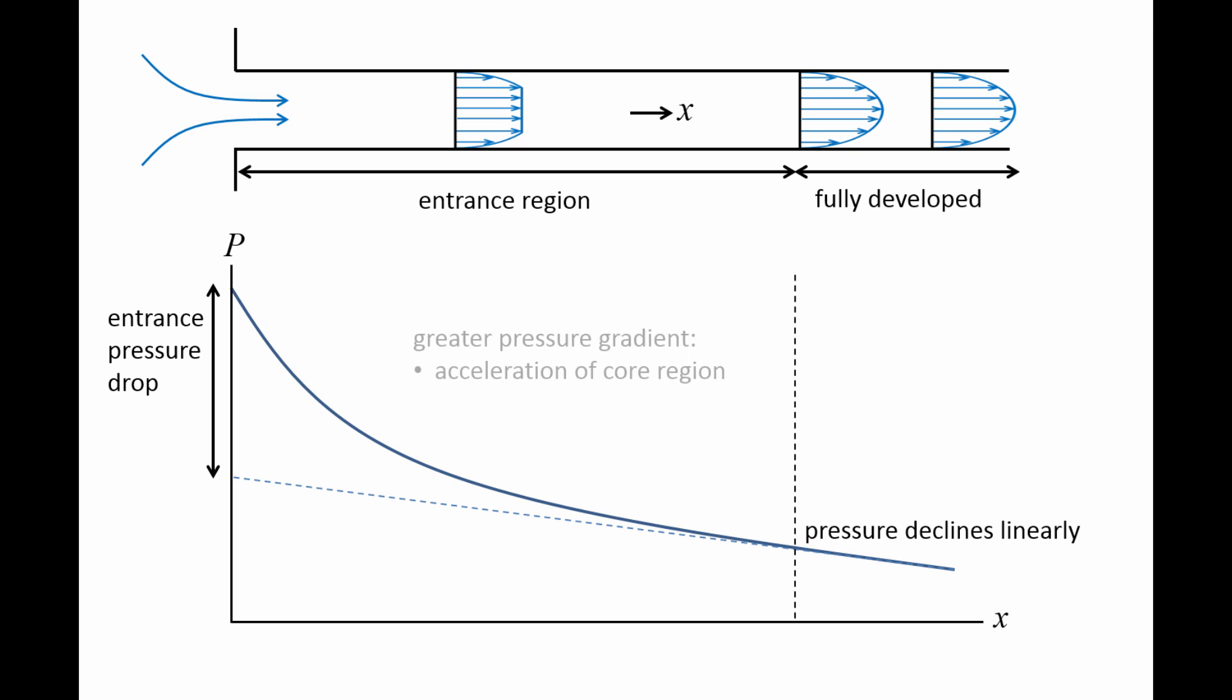First, in order to maintain conservation of mass along the pipe, the core region accelerates as flow in the boundary layer near the wall is decelerated. The energy required to accelerate the core region comes from the potential energy stored as pressure. Second, if the flow is required to change sharply at the entrance, flow separation can occur. This will increase the shear stress in the flow and a greater pressure drop is required to balance out the enhanced viscous effects.